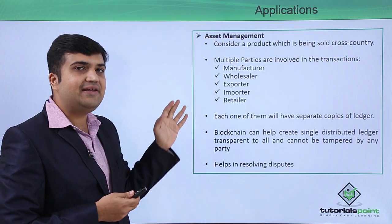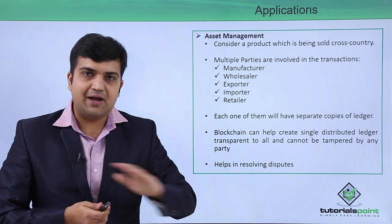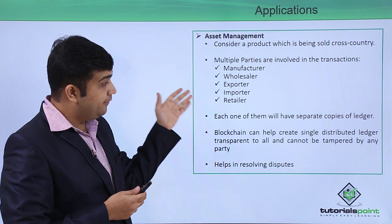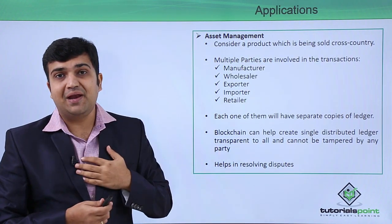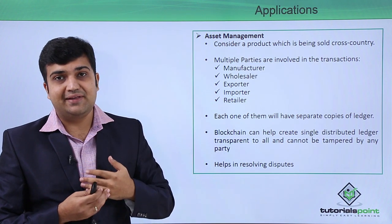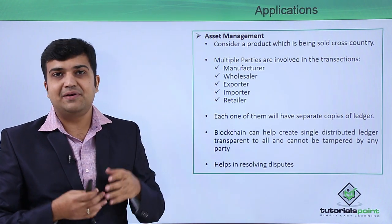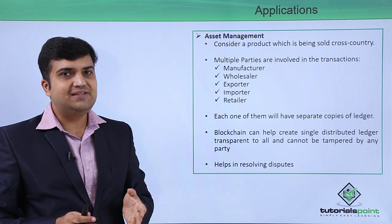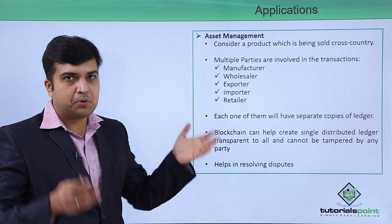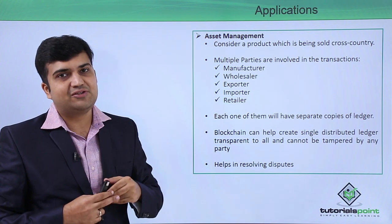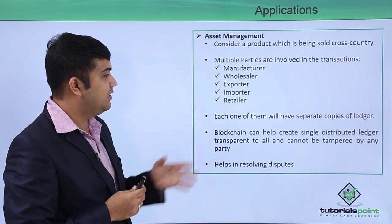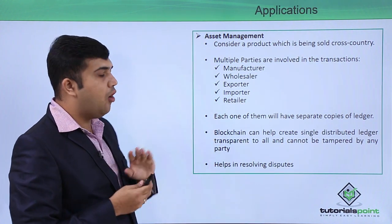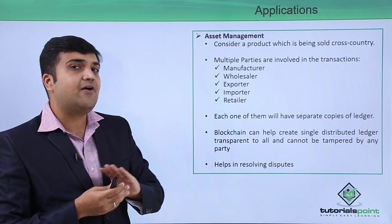Each of these entities may also have different warehouses and transit information for their freights. Now each of these parties might also be maintaining separate copies of their ledger and separate transactions. Think about a scenario where this entire thing is brought into a single instance of blockchain.